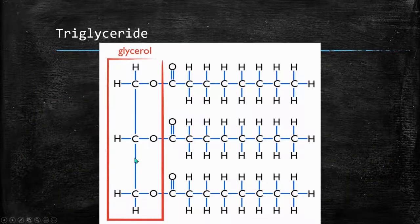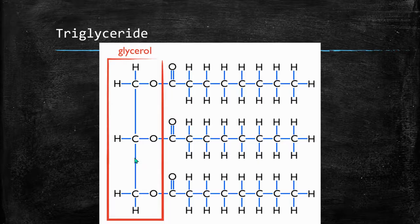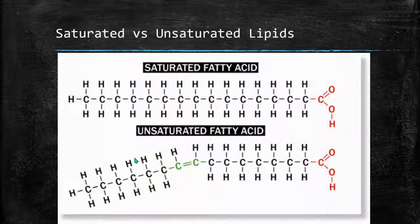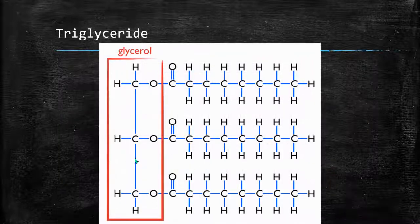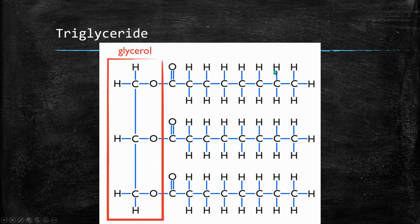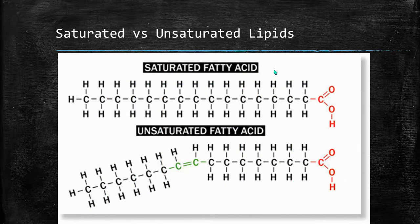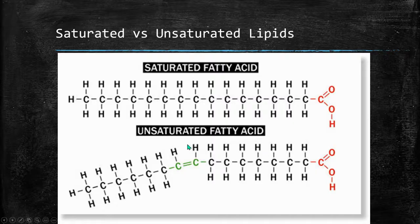When we look at a triglyceride, you can see the C, H, and O. This is how we store long-term energy. We have a glycerol highlighted in red, and then these carbon-hydrogen chains are called fatty acids. We have two kinds of fatty acids: saturated fatty acids that are straight chains and solid at room temperature, and unsaturated fatty acids that have a double bond causing them to bend or kink. A bunch of unsaturated fatty acids together will be like oils that are liquid at room temperature.